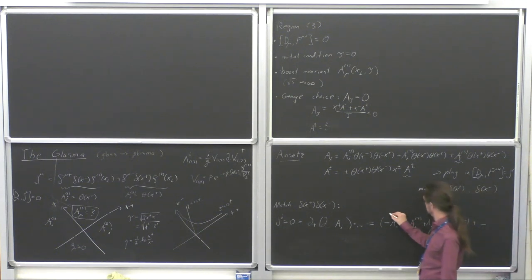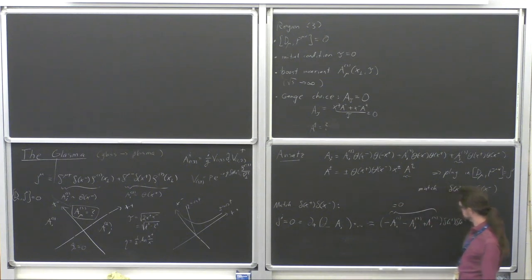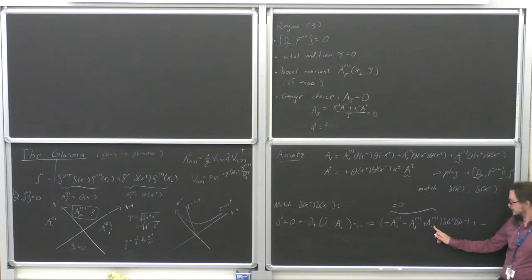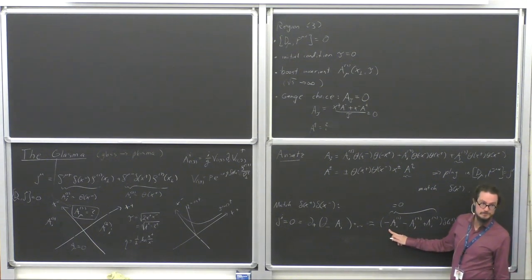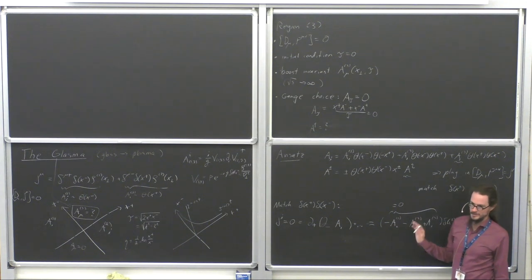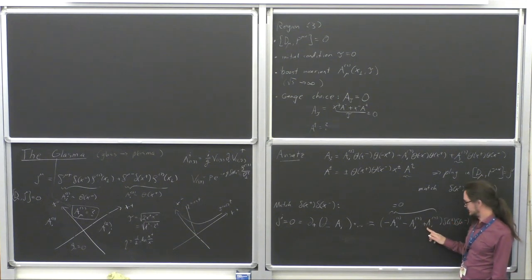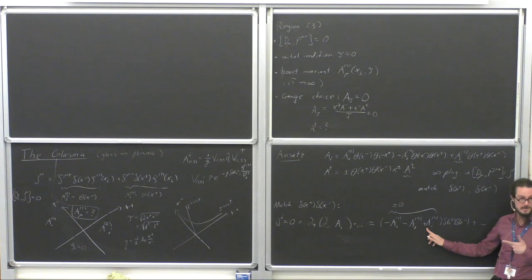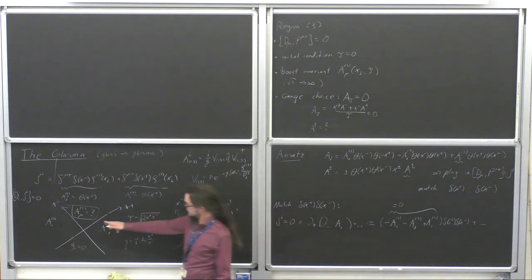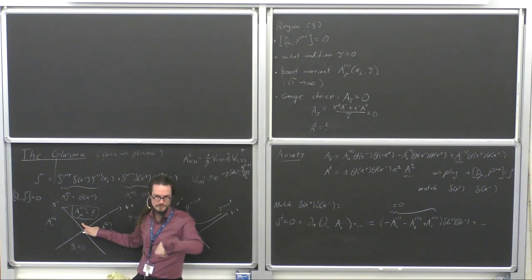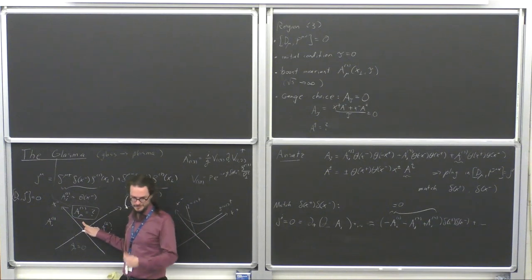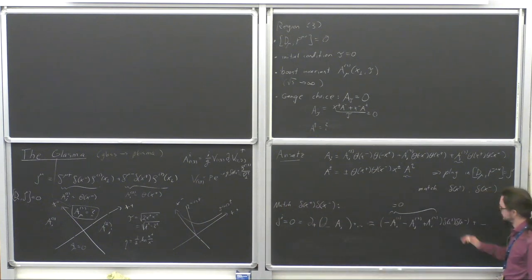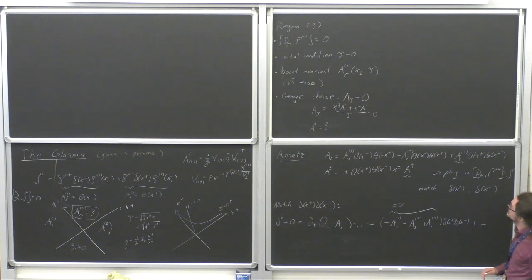This means that my transverse gauge potential in region three — the initial condition at tau equals zero — has to be a sum of the transverse fields of the individual nuclei. This is why I asked you last time as an exercise: even if these two are pure gauge fields, the sum is not a pure gauge field. So now I have a transverse gauge potential which corresponds to a non-zero energy density — it actually corresponds to a longitudinal magnetic field inside the future light cone at tau approaching zero from above. That's my first initial condition.